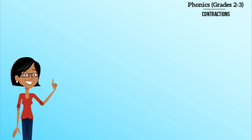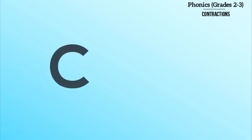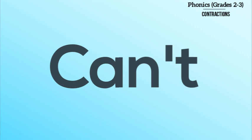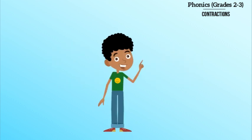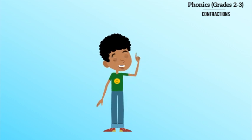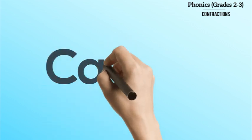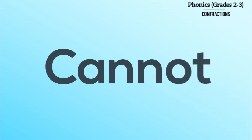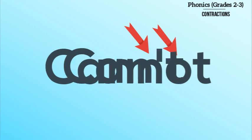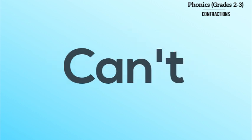Here's a contraction for you to do some detective work on: can't. Can you figure out what letters are missing? I sure know what can't means — it means I can't do something, I am not able to do it. It means I cannot do something. So the missing letters are the N and the O of cannot. So the word got smaller. It contracted from cannot to can't.